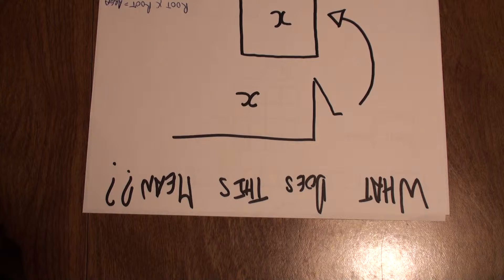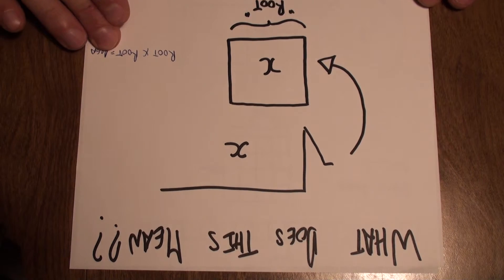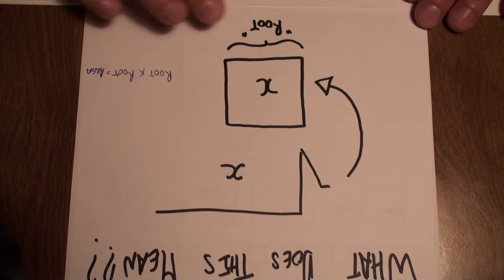So a square is what you would call a regular quadrilateral polygon. It has four sides, all of equal length. And you would call one of the sides the root.